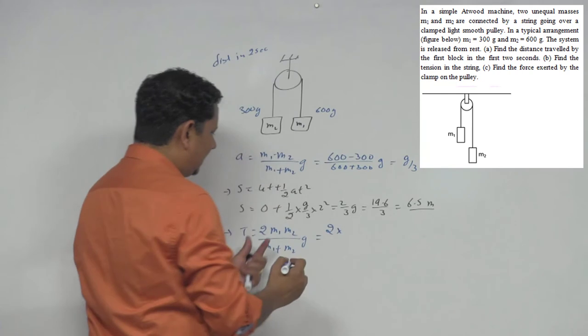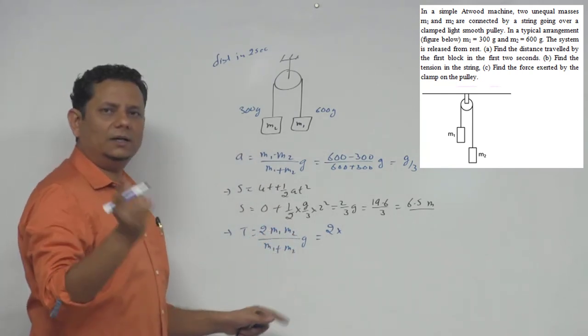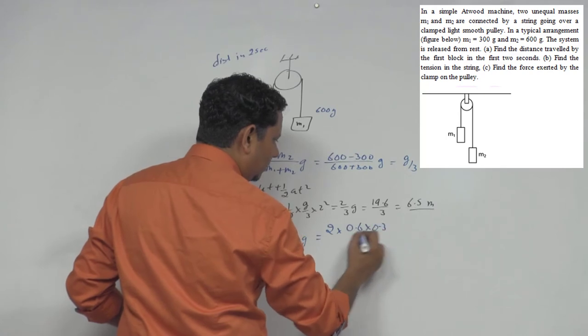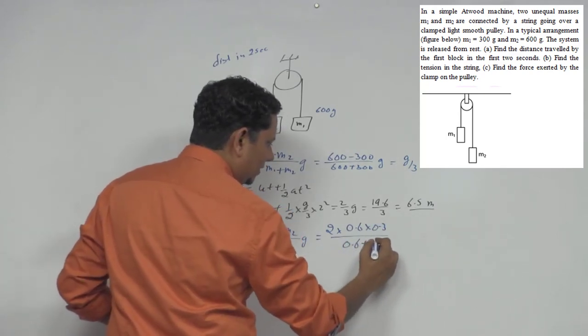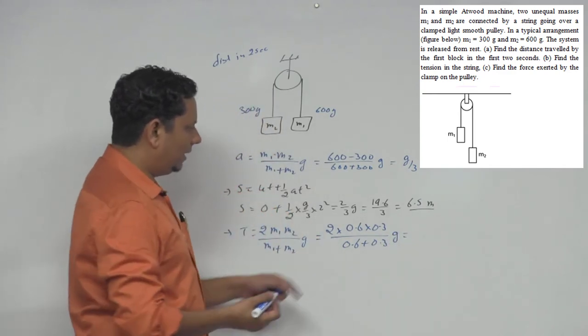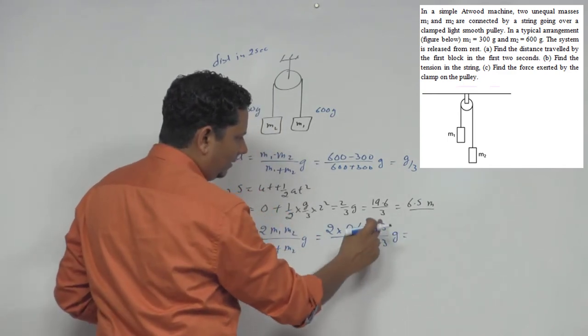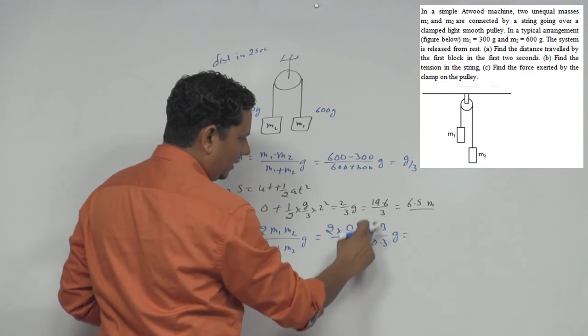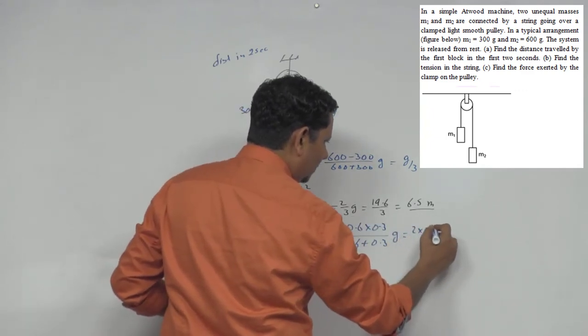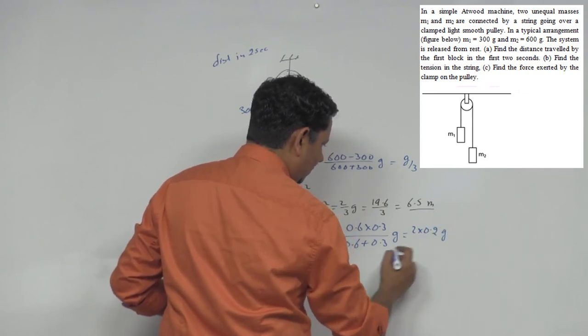For tension in this case, convert m1 and m2 to kg. So 0.6 multiplied by 0.3 divided by 0.6 plus 0.3 times g. That's 0.9.